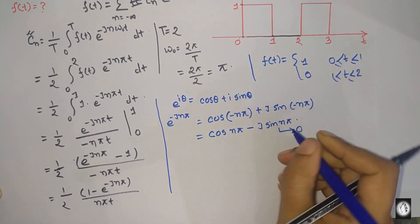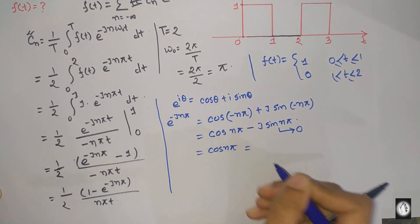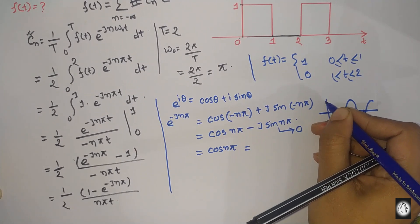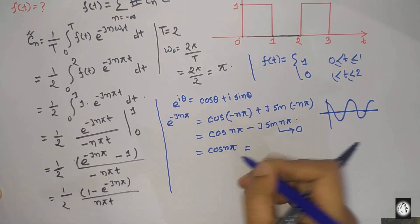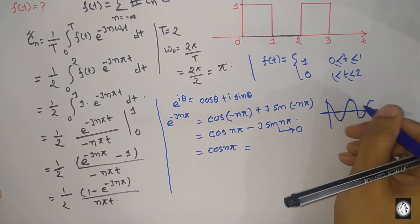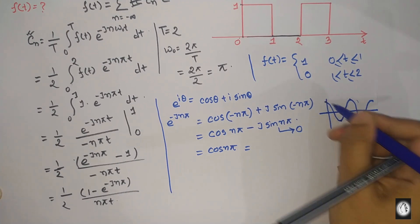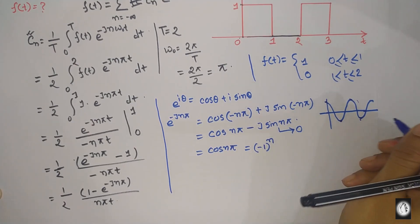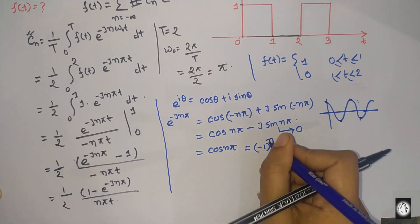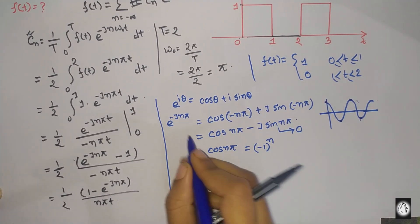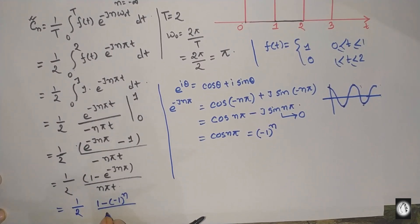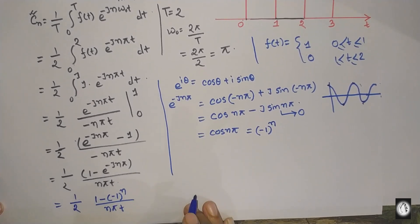cos(nπ) — જ્યારે n odd number (1π, 3π, 5π) હોય ત્યારે cos(nπ) = minus 1, અને જ્યારે n even number હોય ત્યારે cos(nπ) = plus 1. તેથી e to the power minus jnπ = (-1) to the power n. એ equation માં (-1)^n divided by 2nπ times t લખી શકાય.